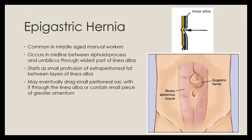Epigastric hernias are common in middle-aged manual workers. They occur in the midline in the epigastric region between the xiphoid process and the umbilicus, where the linea alba is wide. In this region, there can be a small protrusion of extraperitoneal fat between the different layers of the linea alba, constituting an epigastric hernia. The protruding fat can drag some peritoneum along with it and may contain a small piece of the greater omentum.